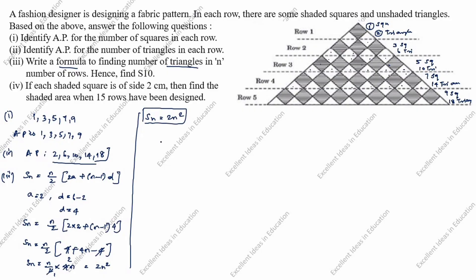Next, we find S10: S10 = 2 × 10² = 2 × 100 = 200. So S10 is equal to 200.